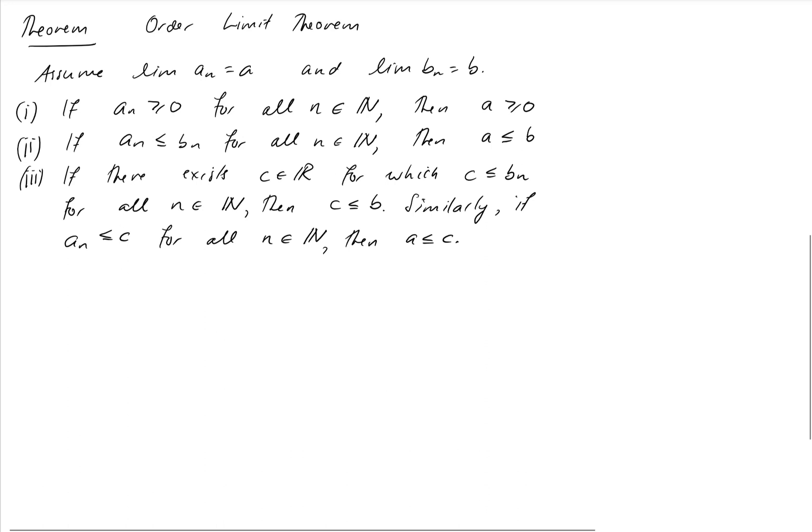Second one, similar statement. It says if two sequences are such that one is always less than or equal to the other one, then the limits also obey that property. You cannot have the limits crossing over at the end, but the sequence terms obeying a_n is less than or equal to b_n.